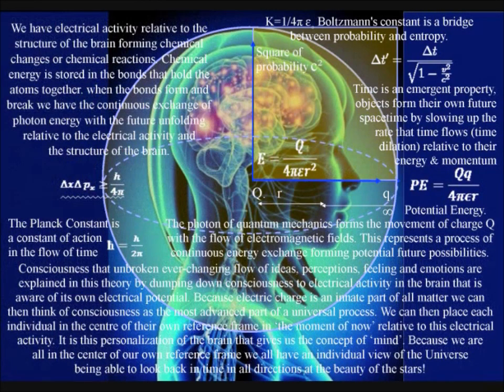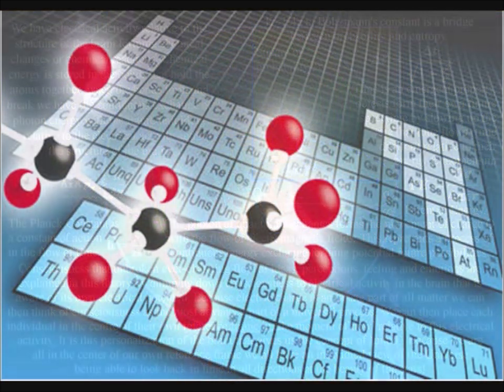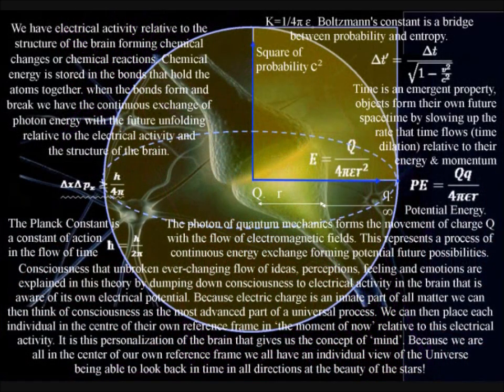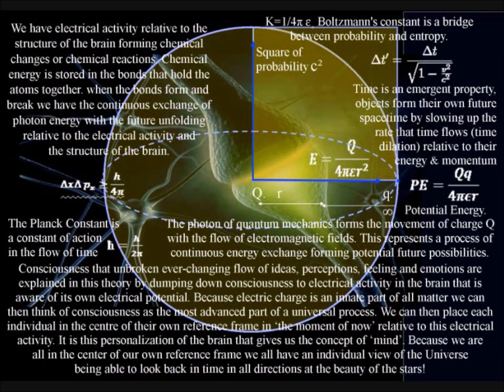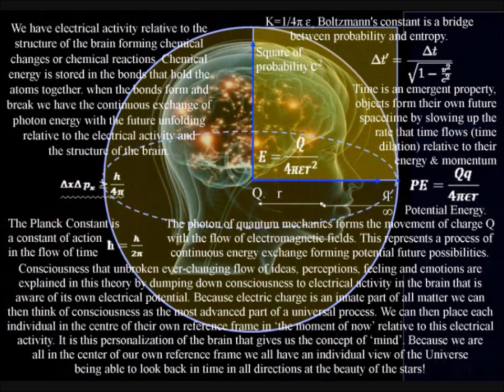We have electrical activity relative to the structure of the brain forming chemical changes or chemical reactions. Chemical energy is stored in the bonds that hold the atoms together. As the bonds form and break, we have the continuous exchange of photon energy with the future unfolding relative to the electrical activity and the structure of the brain.